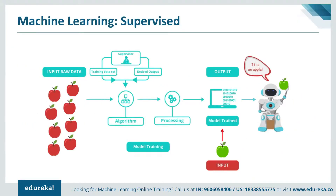Starting with supervised learning — what is it? Supervised learning is where you have input variables X and an output variable Y, and you use an algorithm to learn the mapping function from the input to the output, that is Y = F(X). The goal is to approximate the mapping function so that whenever you have new input data X, you can predict the output variable Y for that data.